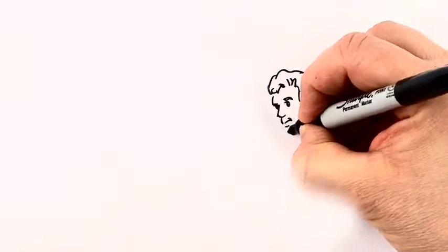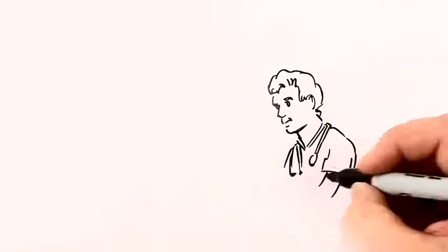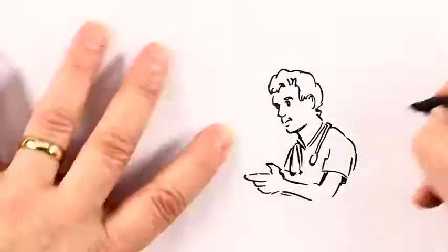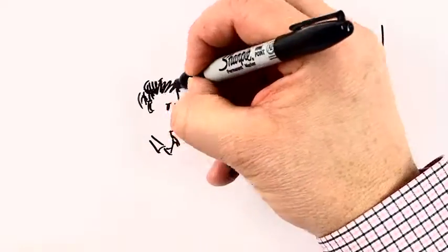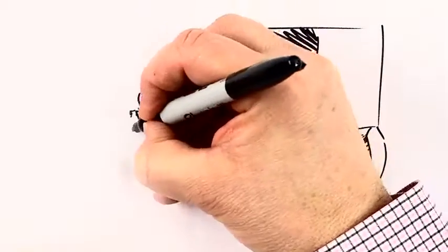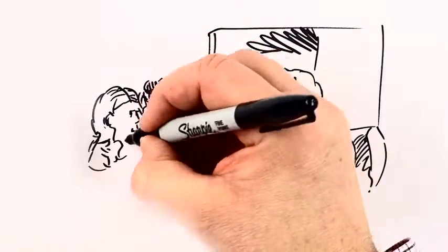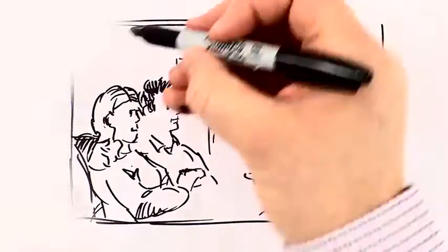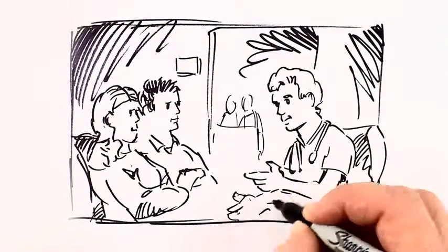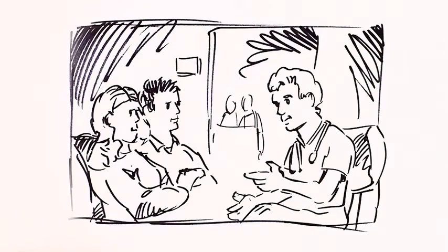But unfortunately, an ultrasound doesn't always give us the information we need. In Tanya's case, it did not show appendicitis, but it did not show a normal appendix either. So it was not entirely helpful. Am I making sense? Sure. If I understand correctly, the blood work was normal, the urine tests were normal, but the ultrasound was unclear. Exactly.